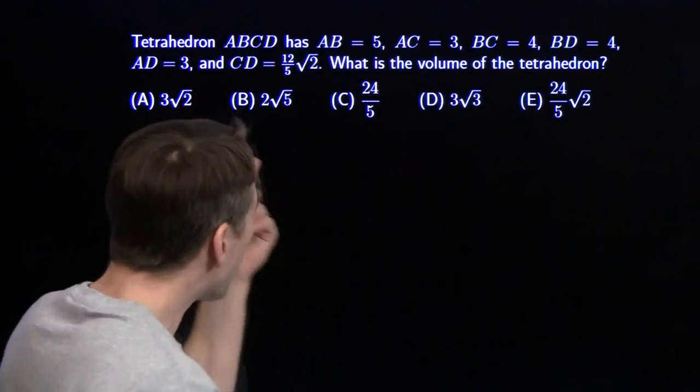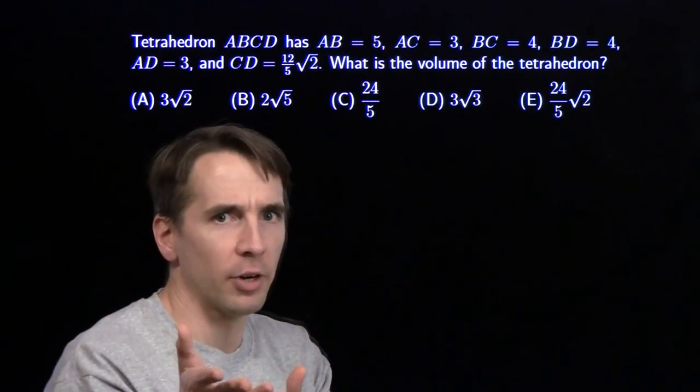Going on to the next two lengths, we've got another 3, another 4. Triangle ABD is also a 3, 4, 5 right triangle.